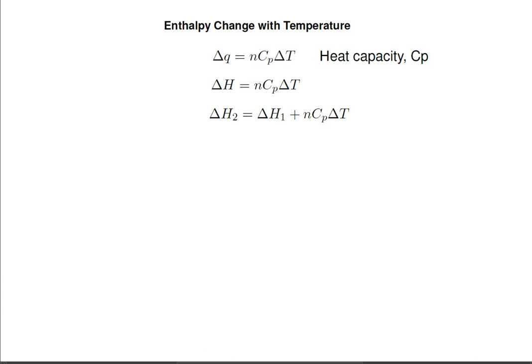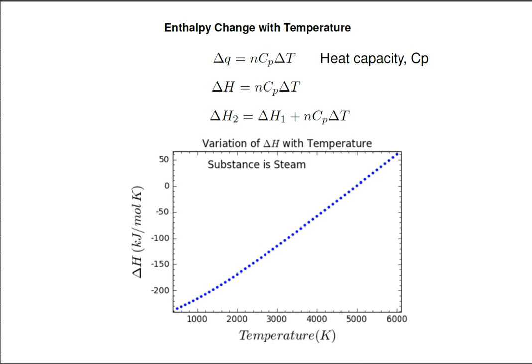Most often, the delta H1 that we're actually able to find is delta H of formation at 298.15 K. Such is the case for water-steam shown in this figure. We see data graphed for delta H of formation for steam from 500 degrees C to 6000 degrees C. The graph is not linear, but this equation suggests that it should be. That can only mean that Cp is not constant with temperature.